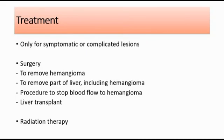Surgery can also be done to stop the blood flow to the hemangioma, because without a blood supply, the hemangioma will stop growing or it might shrink in size. There are two ways to stop the blood flow: tying off the main artery, also known as hepatic artery ligation, or injecting medication into the artery to block it, also known as arterial embolization.